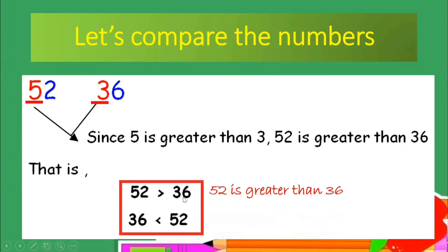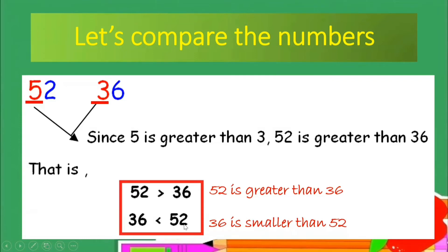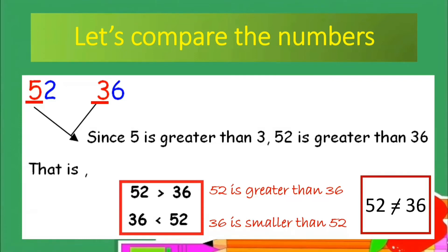We are going to use the greater than symbol since 52 is written first: 52 is greater than 36. We can also switch the numbers — if we write 36 first, we will change the symbol to smaller than: 36 is smaller than 52. Another way of answering is to use the not equal to symbol: 52 is not equal to 36.